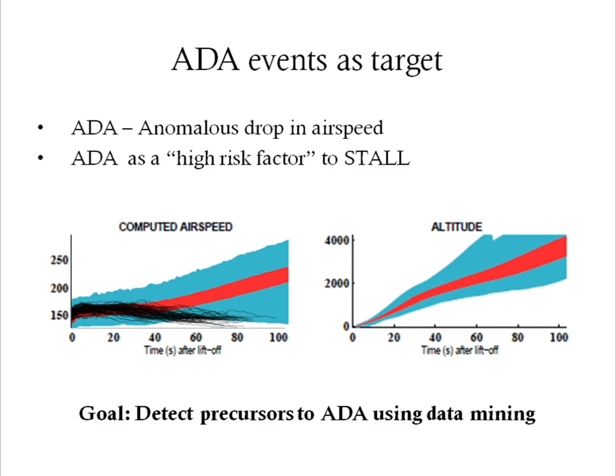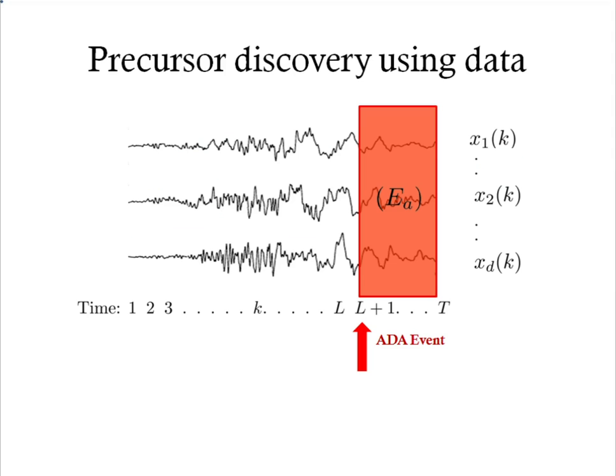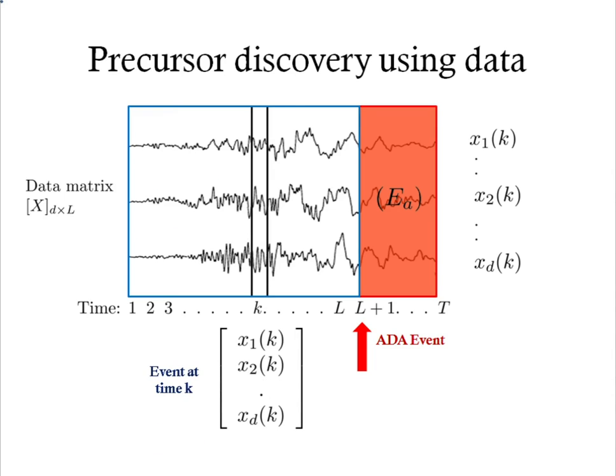So our goal is to find precursors to the ADA events using data. We consider the data from an airline that has been de-identified. The data was recorded as part of the FOQA program and includes more than 350 time series variables measured on board. For this study, we considered about 70,000 takeoffs, out of which about 20,000 flights had a drop in airspeed. Each flight is a multi-dimensional time series and we look for precursors in the data that lead up to the drop in airspeed.